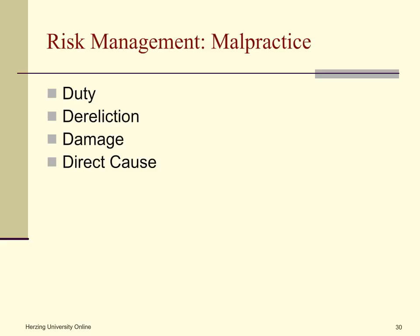In risk management, malpractice involves four elements: duty, dereliction, damage, and direct cause. Duty refers to the nurse's responsibility to the patient. Dereliction refers to the nurse who did not carry out that duty. Damage refers to when the patient was injured. And direct cause refers to the injury occurring as a result of the nurse's failure to carry out their duties.